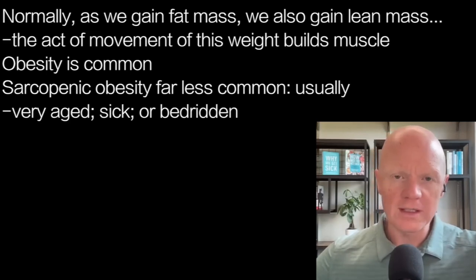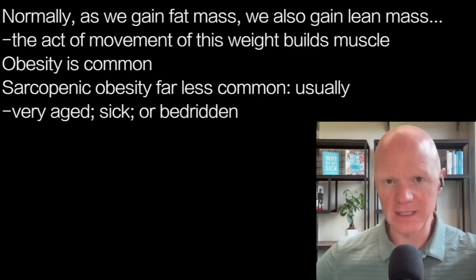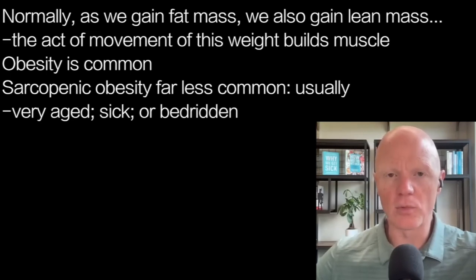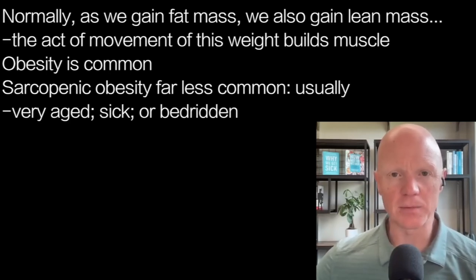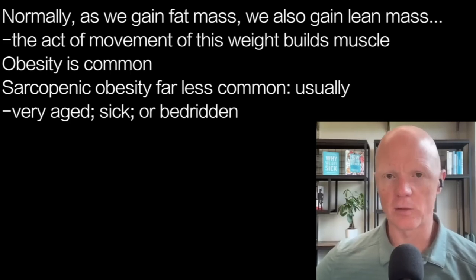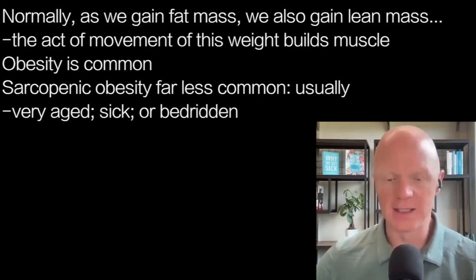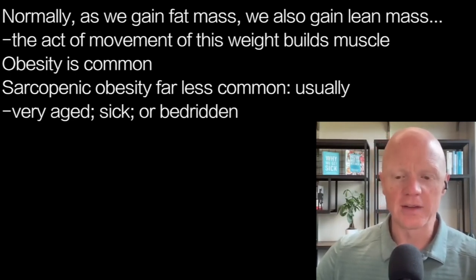One thing that makes sarcopenic obesity unique — and why it's less common than straight-up obesity — is that normally, as a person gains weight going from lean to obese, yes they are obviously gaining fat mass, but they are also less obviously gaining muscle mass. After all, every act of living now meets more resistance than before, so the very act of getting up and moving around, climbing stairs, or going for a walk challenges the muscles more. Thus, the person who is obese tends to have more muscle mass than their leaner counterpart, and we would just call that problem obesity with no sarcopenia.